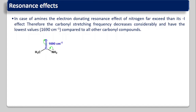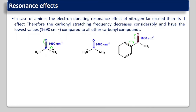If the number of amine groups is increased — for example in urea, which has two amine groups — the +R effect increases further, single bond character increases in the carbonyl group, and the frequency decreases to around 1660 cm⁻¹. For benzamide, there is both a benzene ring and an amine group giving a +R effect, so the vibrational frequency is 1680 cm⁻¹, slightly higher than amide alone because the +R effect of benzene is less than that of the amine group.